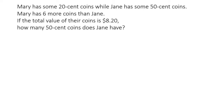After reading the question, let us identify the keywords. The first set of keywords: we understand that there are a set of 20 cent coins and another set of 50 cent coins. The second set of keywords: we know that Mary, who has the 20 cent coins, has 6 more coins compared to Jane, who has all the 50 cent coins. The third set of keywords states that the total value of their coins is $8.20. Based on these three sets of information, we will be able to find how many coins Jane has.